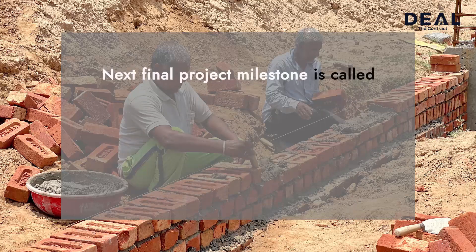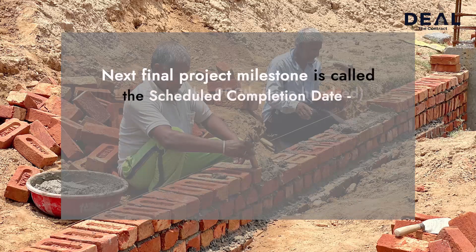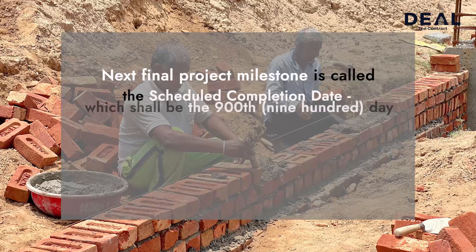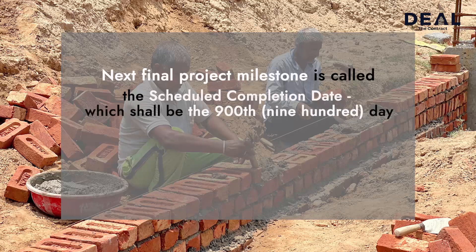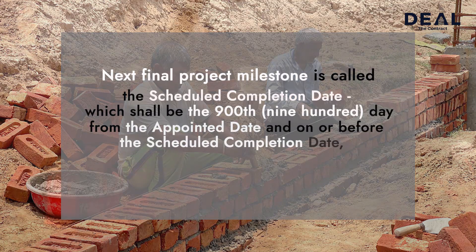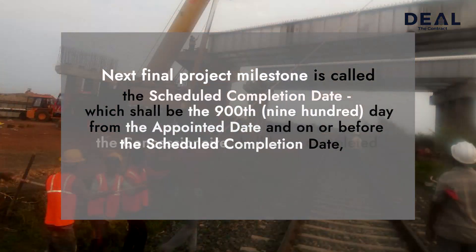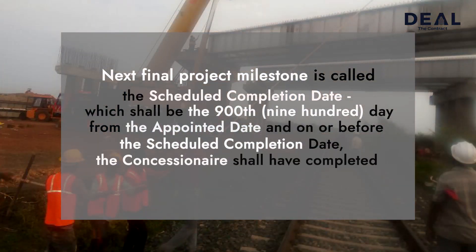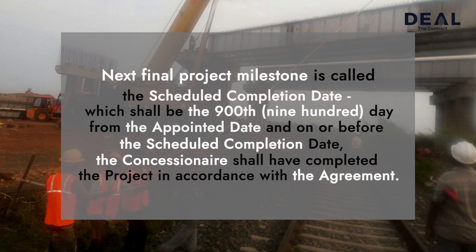The final project milestone is called the Scheduled Completion Date, which shall be the 900th day from the appointed date. On or before the Scheduled Completion Date, the concessionaire shall have completed the project in accordance with the agreement.